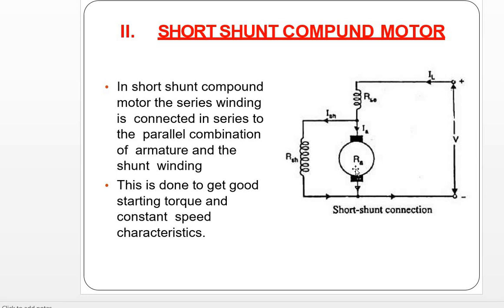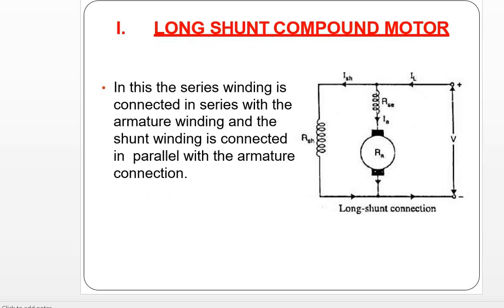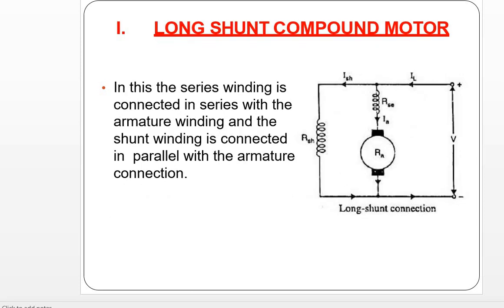The short-shunt configuration is done to get good starting torque and constant speed. In short, the starting torque needs to be higher and the speed needs to be constant, so we use the short-shunt compound motor. There are also cumulative compound DC motor and differential compound DC motor types.